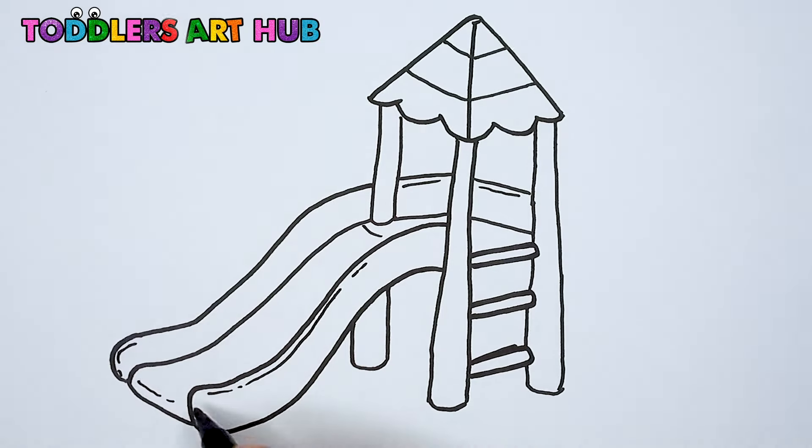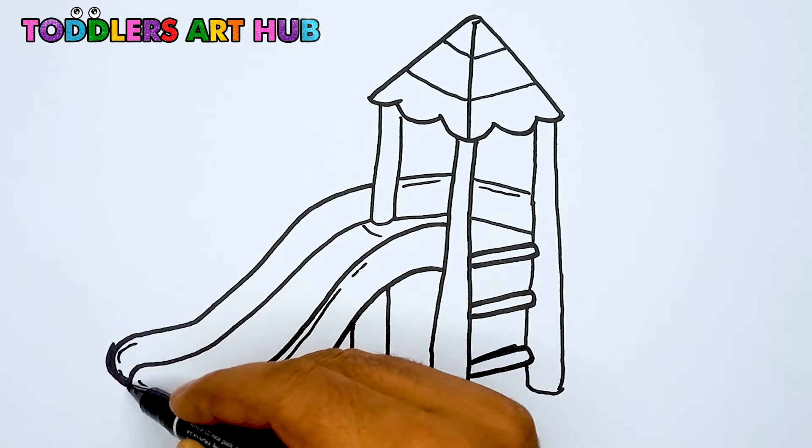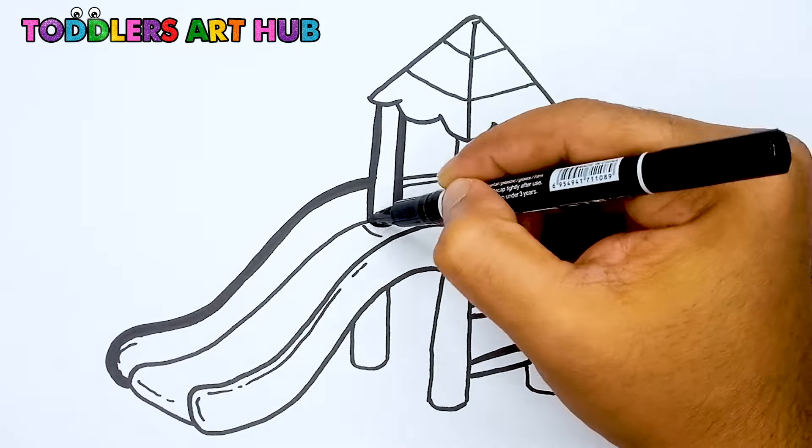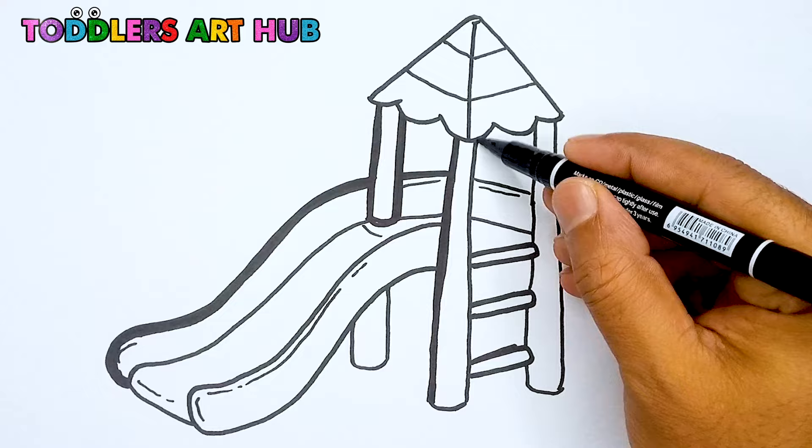Our drawing is almost done. Let's make it pop by outlining everything with our black marker. Trace over all the lines to make them bold and sharp.